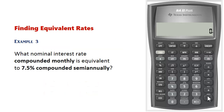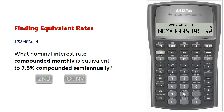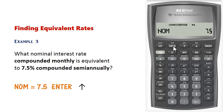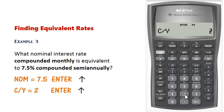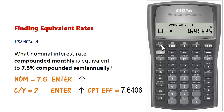Now we'll look at finding equivalent rates — converting an interest rate from one compounding frequency to another. We want to find the nominal interest rate compounded monthly that is equivalent to 7.5% compounded semiannually. Press 2nd, ICONV, set nominal rate to 7.5, press Enter, scroll up, change CY to 2 for semiannual, press Enter, scroll up again, and compute effective. This gives the effective rate for 7.5% compounded semiannually.